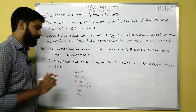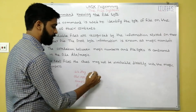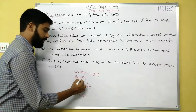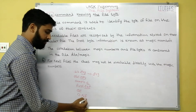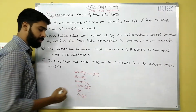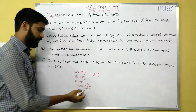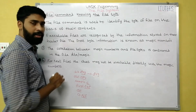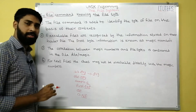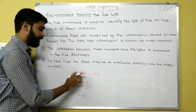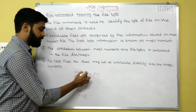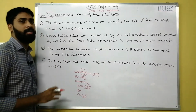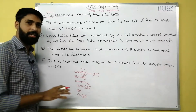If I ask you what is the type of this file, obviously you would say it is a JPEG file — by seeing the extension we can identify the type. So PDF is a document, 'first.txt' is a text file, 'sample.c' is a C file, and 'abc.mp4' is a video file. But in the Unix operating system, it does not identify the type of a file based on the extension.